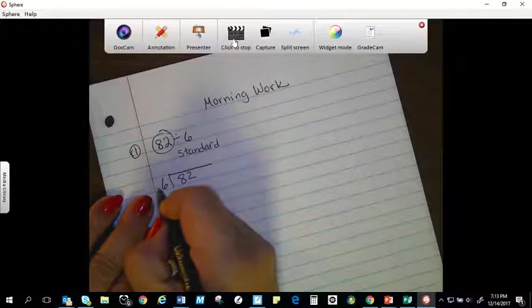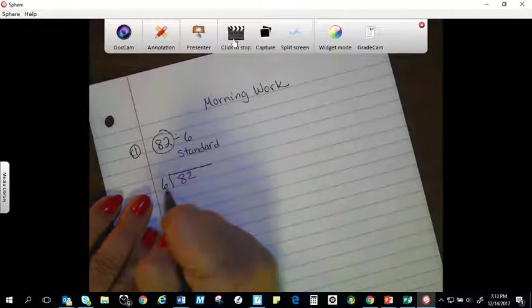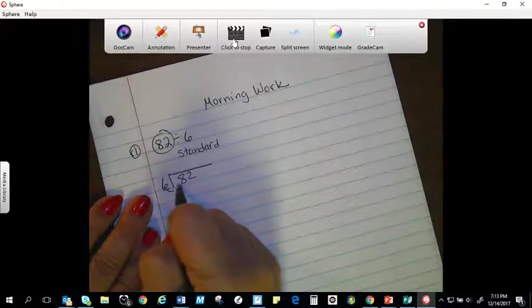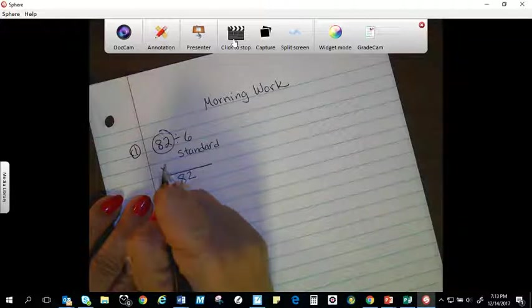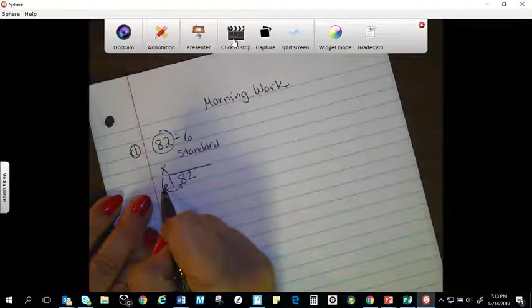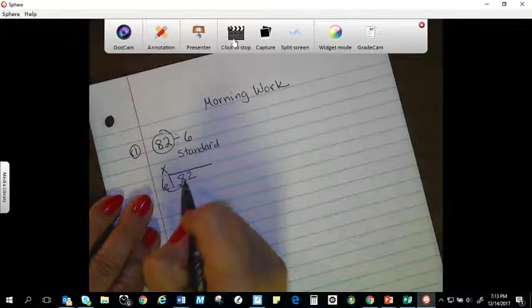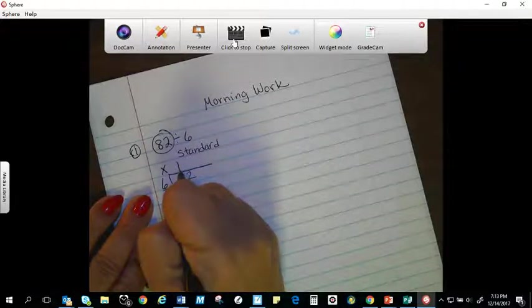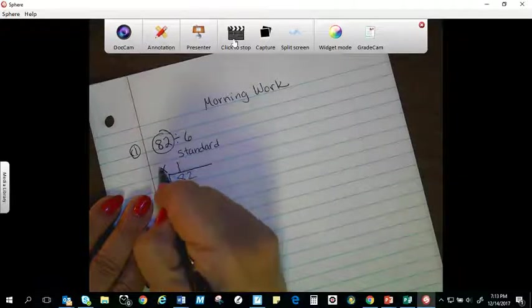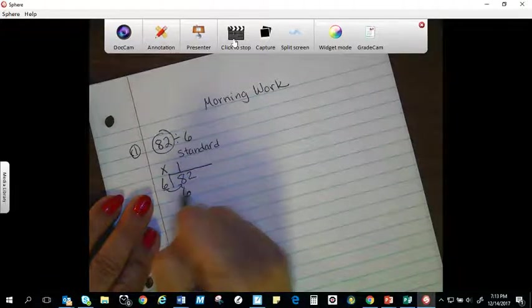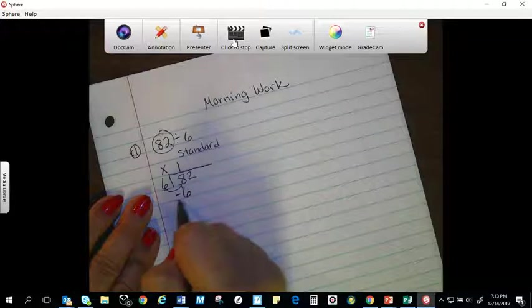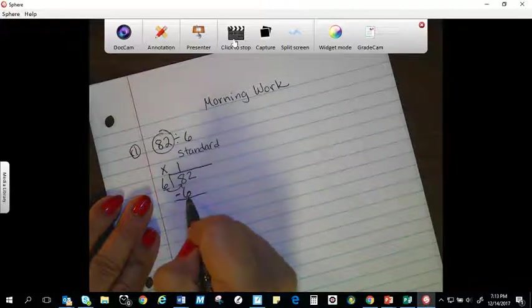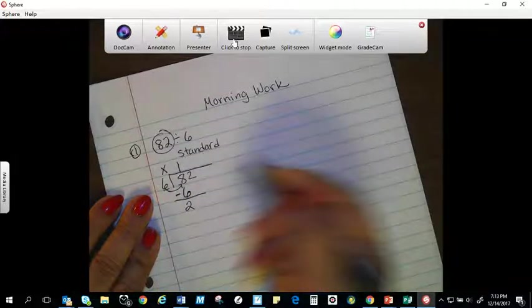Now I'm going to start off. Six, how many groups of six? I put a multiplication sign here and ask myself how many groups of six go into eight. Well, since eight is larger than six, I'm going to say it goes one time because one times six is six. Then I'm going to subtract it out. Eight minus six is two.